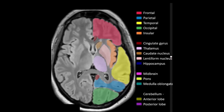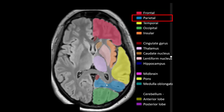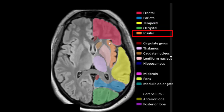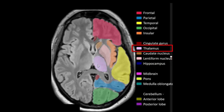Frontal lobe, temporal lobe, parietal lobe, occipital lobe, insular cortex, lentiform nucleus, thalamus, head of caudate nucleus. Right and left anterior horn of lateral ventricle, cingulate gyrus.